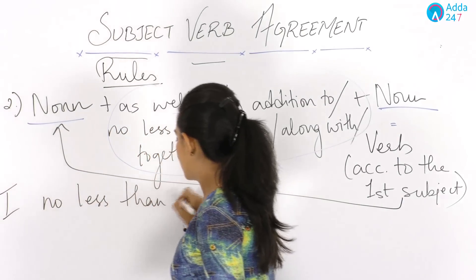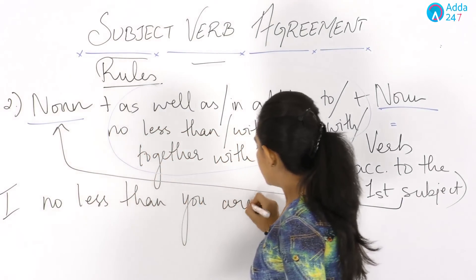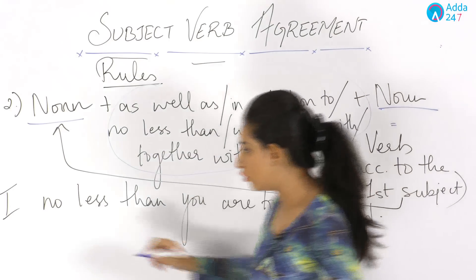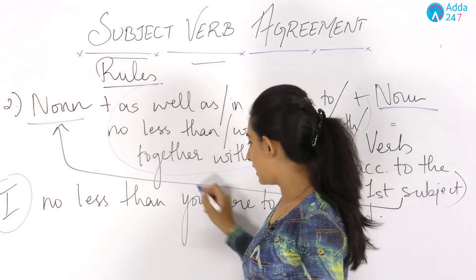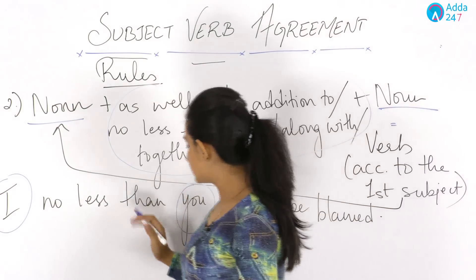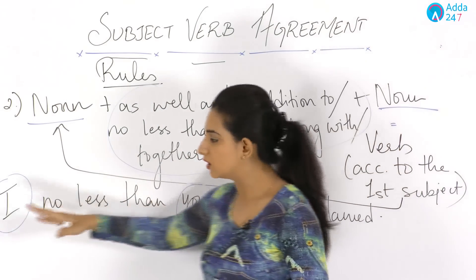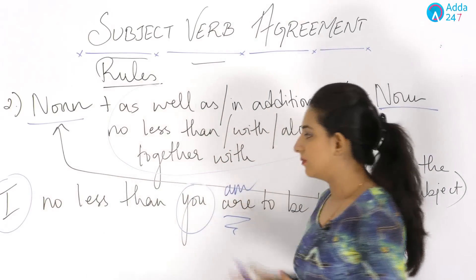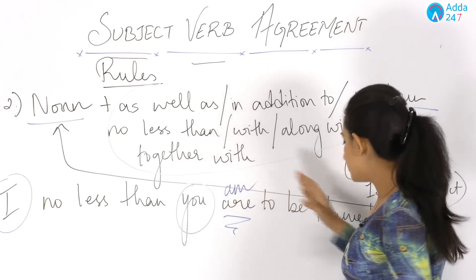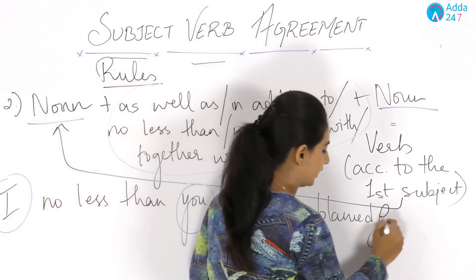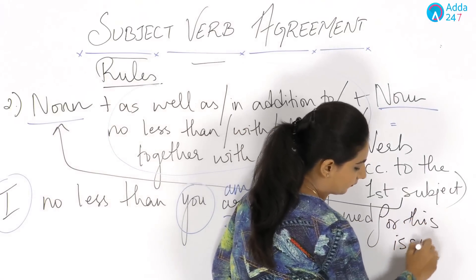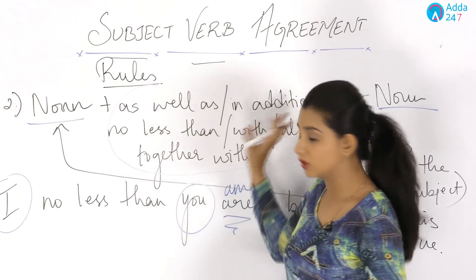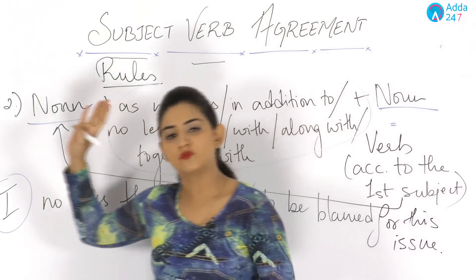For example: 'I, no less than you, am to be blamed.' Here 'I' is the first subject and 'you' is the second. The verb must agree with the first subject 'I', so we use 'am' — not 'are'. The correct sentence is: 'I, no less than you, am to be blamed for this issue.'